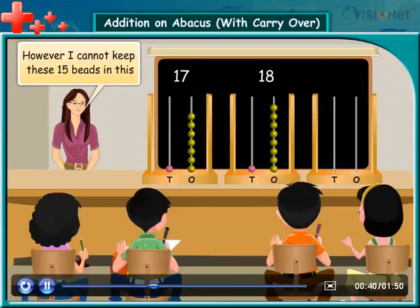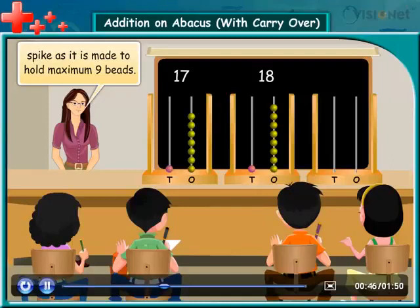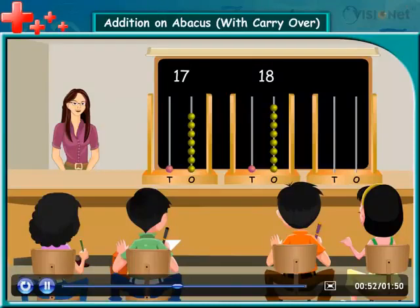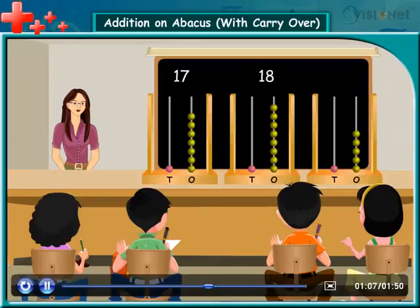However, I cannot keep these 15 beads in this spike, as it is made to hold a maximum of 9 beads. The number 15 can be written as 1 ten plus 5 ones. So, let us put 5 beads in the ones spike and 1 bead in the tens spike of the third abacus.